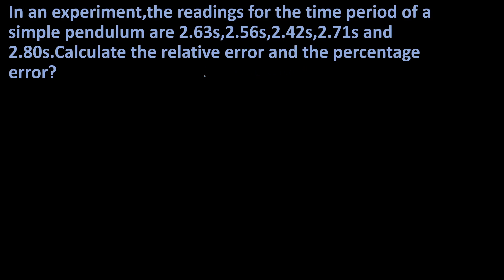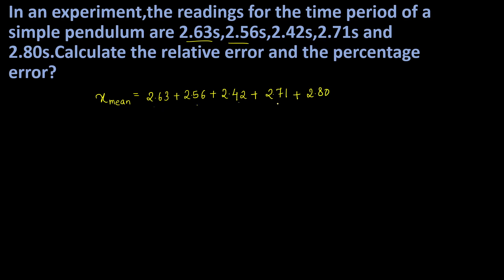Next question: calculate relative error and percentage error based on given values. First find the mean value x̄ by adding all measurements and dividing by the number of readings. Adding the five values and dividing by 5 gives x̄ equals 2.624.